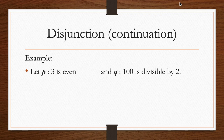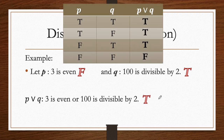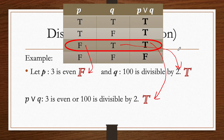As an example, P is '3 is even' and Q is '100 is divisible by 2.' The disjunction P or Q reads: '3 is even or 100 is divisible by 2.' P is false because 3 is odd, and Q is true because 100 is indeed divisible by 2. Therefore P or Q is true because there is at least one true — following row 3 of the table.